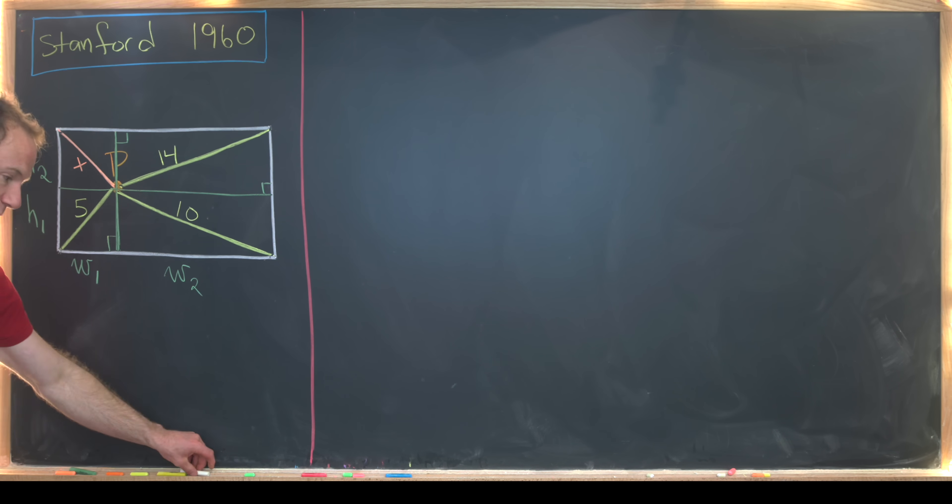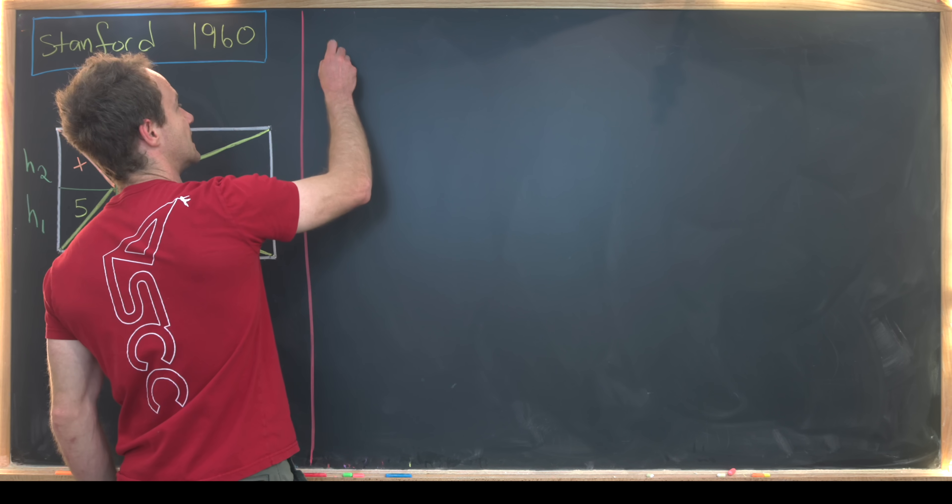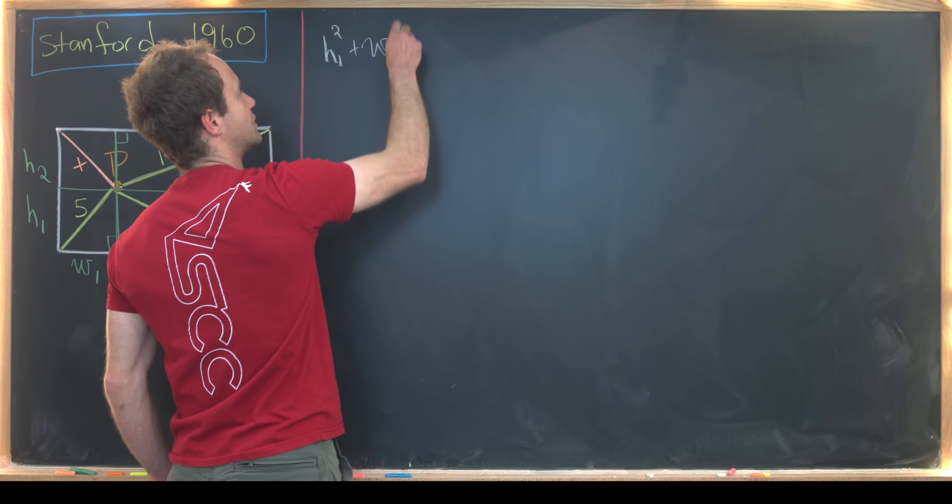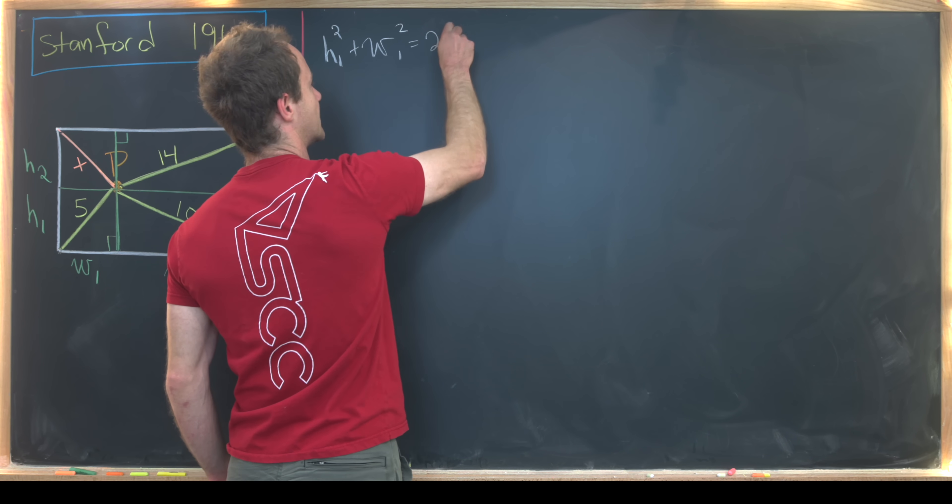Now we can apply the Pythagorean theorem to each of these rectangles. Well, maybe the right triangles built into the rectangles. So let's see, maybe we'll work from here in a clockwise configuration. Starting here, we see that h1 squared plus w1 squared is equal to 5 squared, which is 25. So let's write that down. h1² + w1² = 25.